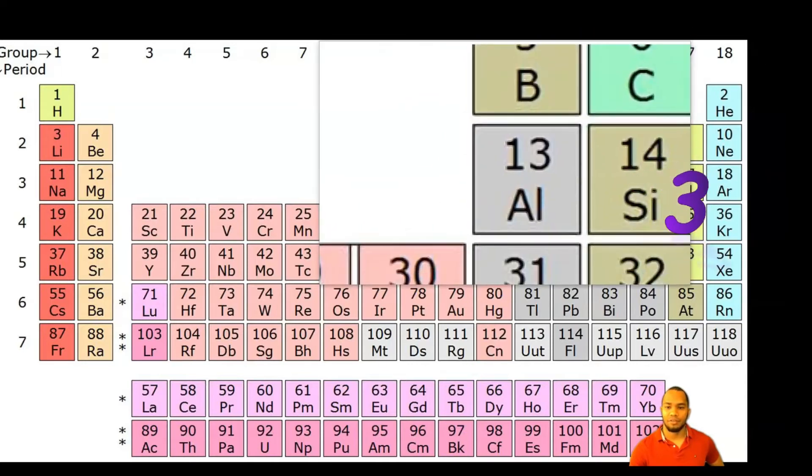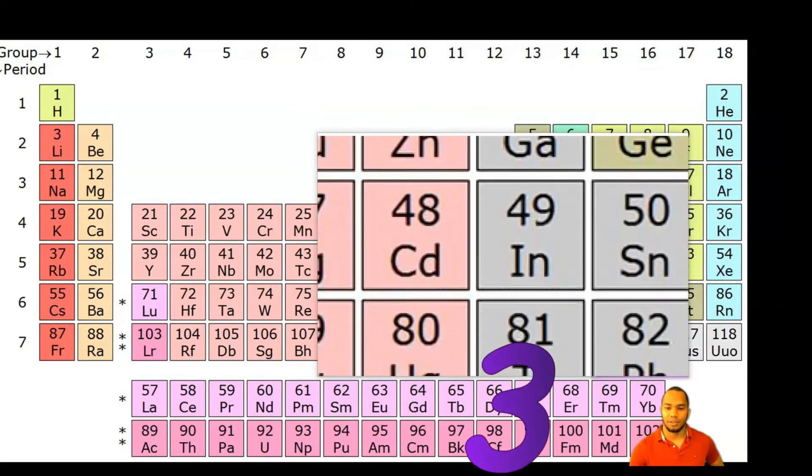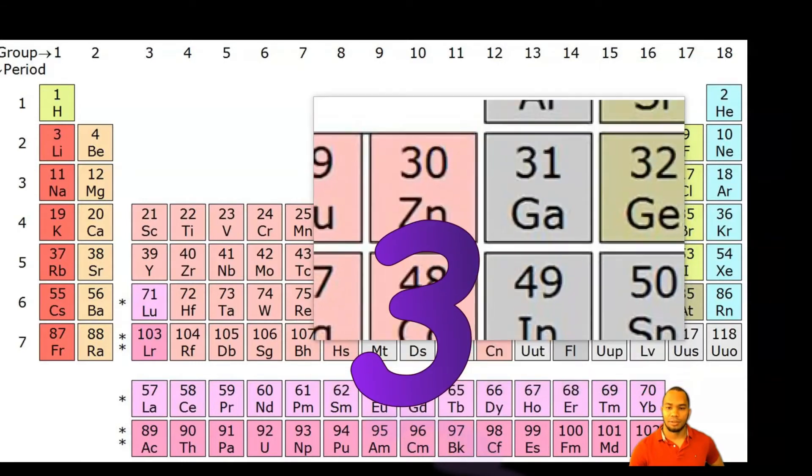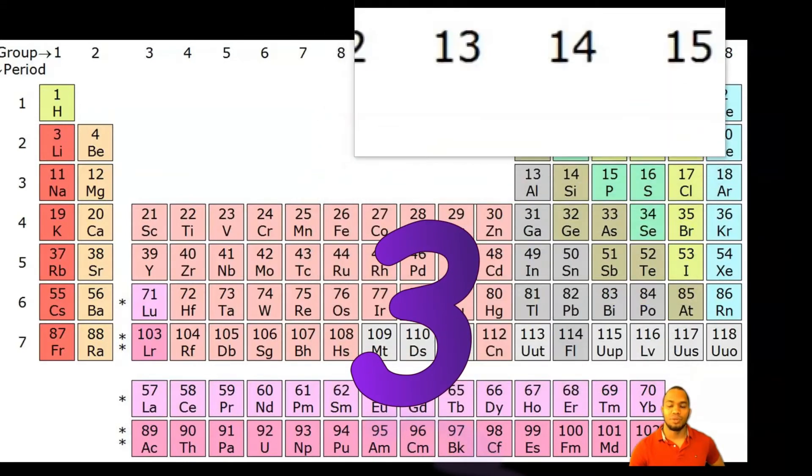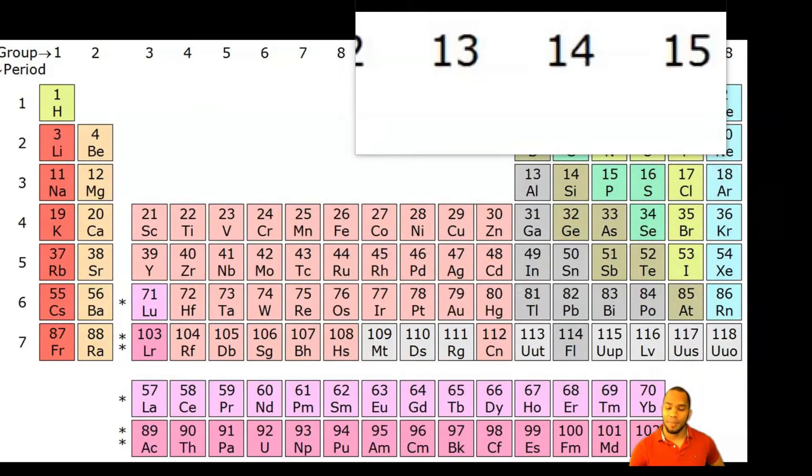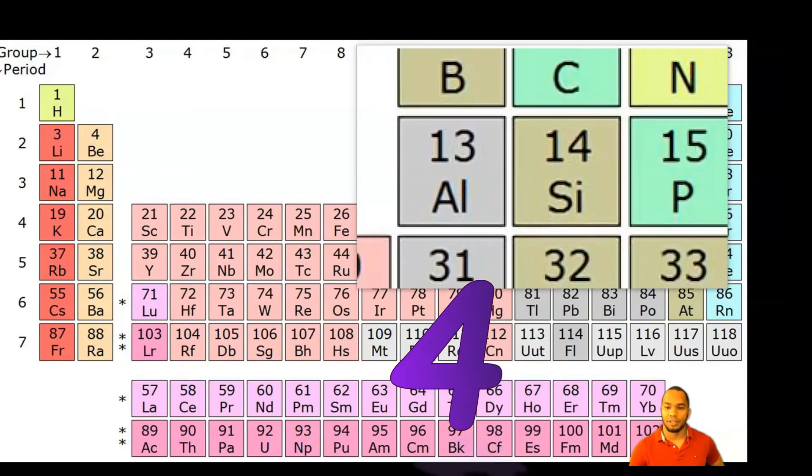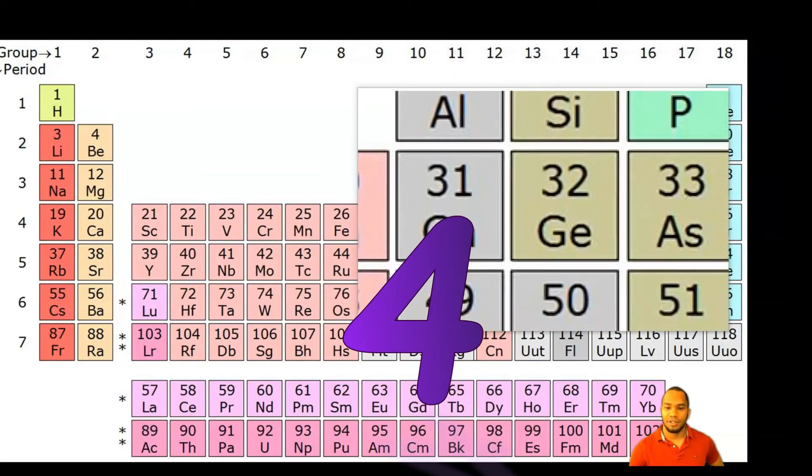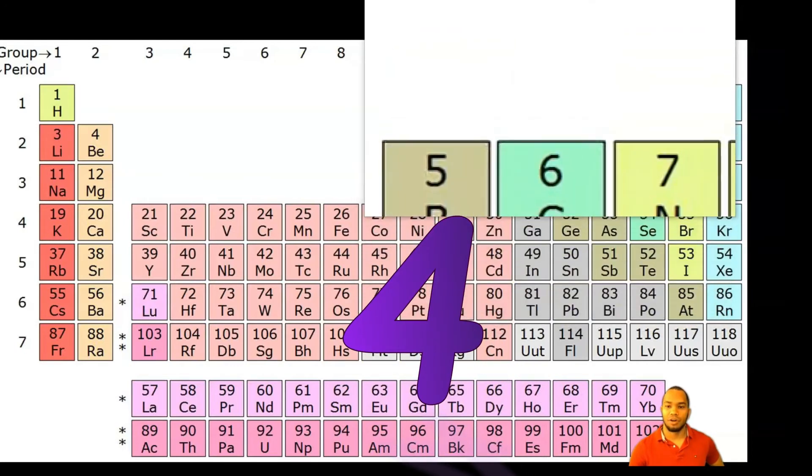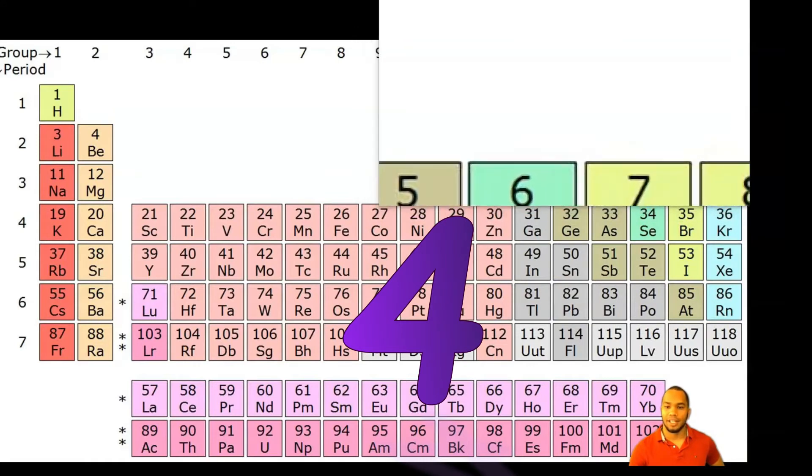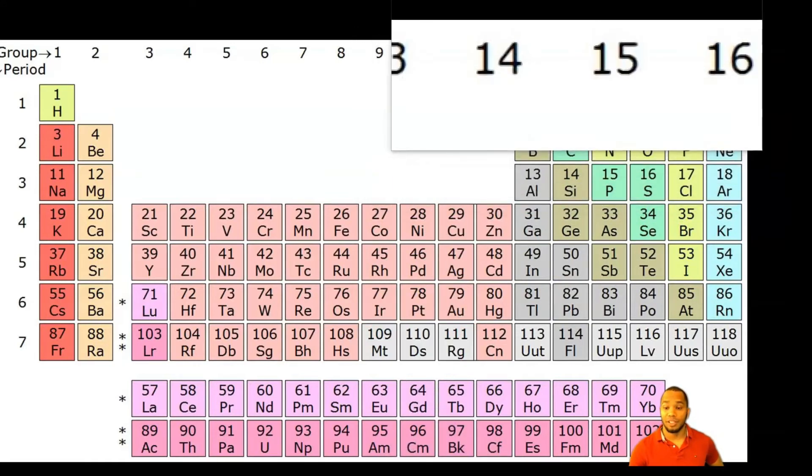have three valence electrons. What do you think group fourteen will have? They will have four valence electrons. Carbon, silicon, germanium - these all have four valence electrons. Group fifteen is going